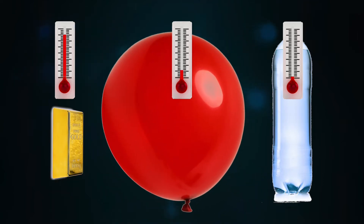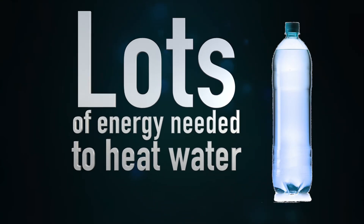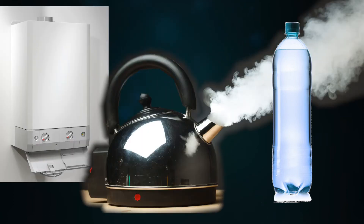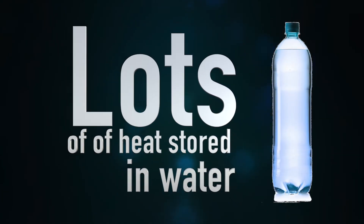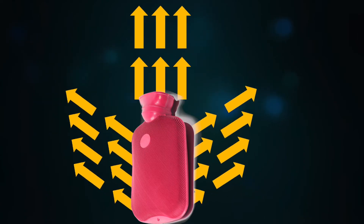One kilogram of air takes up much more volume than water and gold. Water's high specific heat capacity means we need lots of energy to heat it. That's why boilers and kettles are probably the most powerful devices in your house. It also means there's lots of heat stored in water, so it's great for pumping heat around your house into radiators and keeping yourself warm with a hot water bottle.